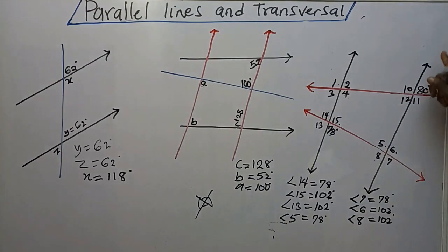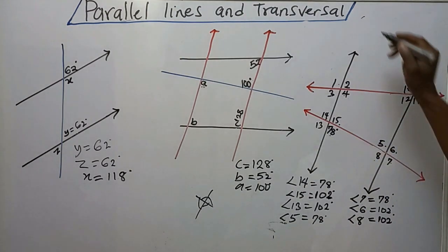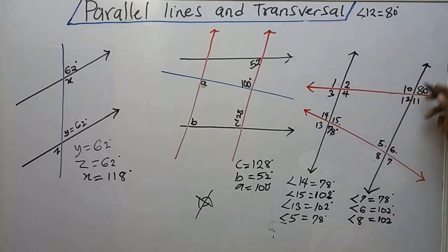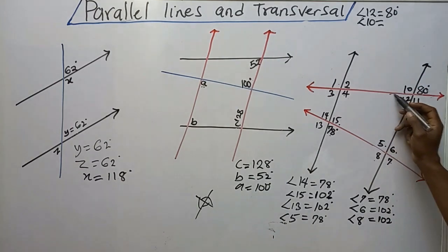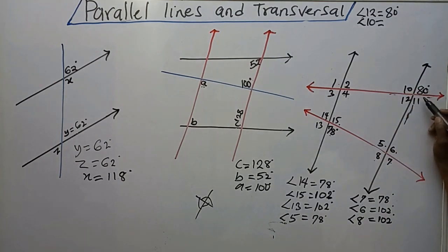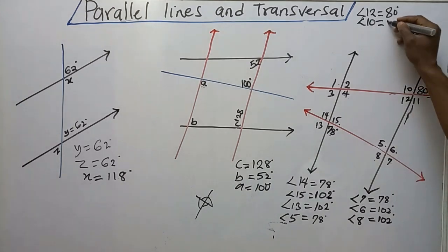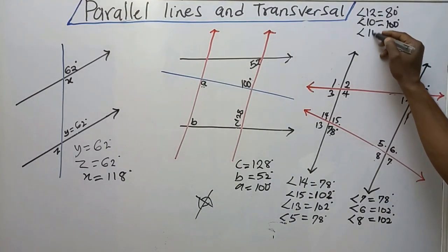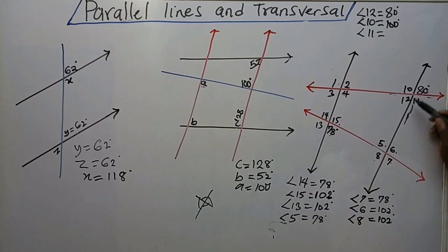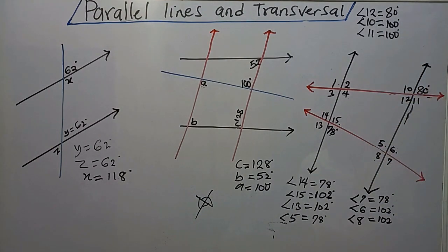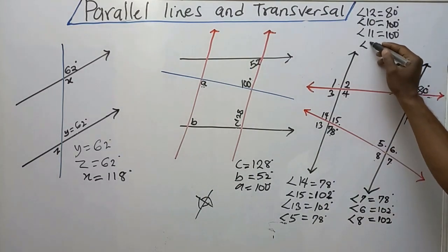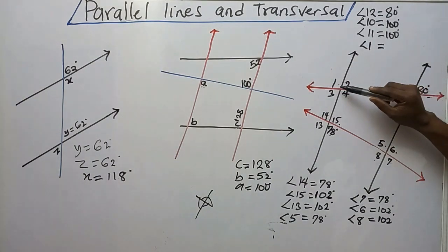Looking at the other parallel line with its transversal: angle 12 is 80 degrees because these are intersecting lines and the angles apart are equal. To get angle 10: this is a straight line, so 180 minus 80 gives me 100 degrees. For angle 11: since these are intersecting lines, 10 and 11 are vertically opposite, so angle 11 is also 100 degrees.